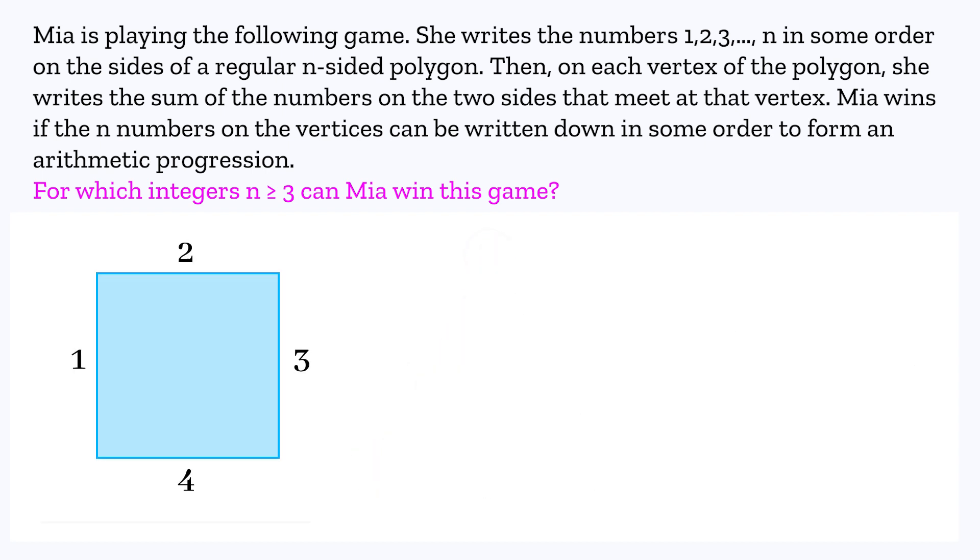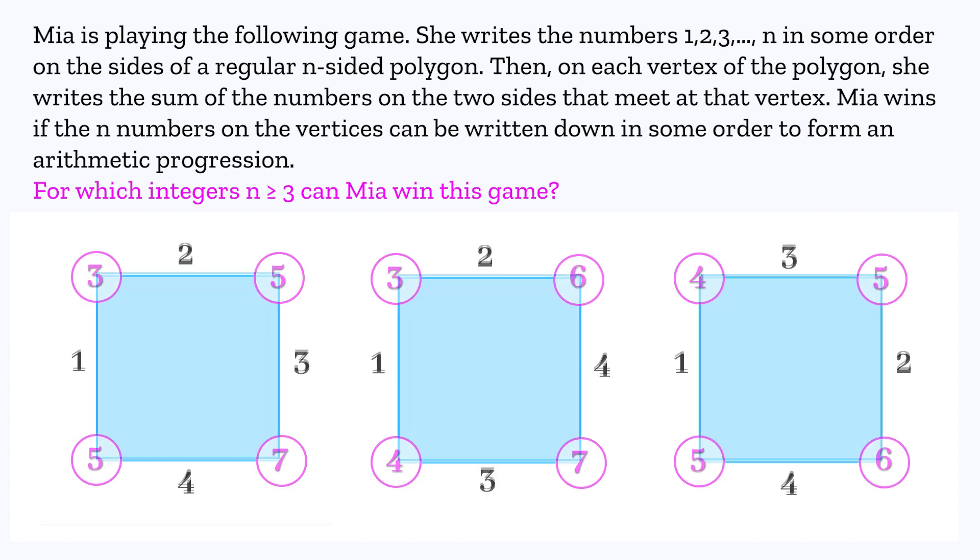For n equals 4, you are going to have to do some trial and error. But if you try it, you'll actually find there's only 3 different ways to arrange the numbers 1, 2, 3, 4, and none of them give vertex sums which form an arithmetic progression. So Mia can't win when n equals 4.